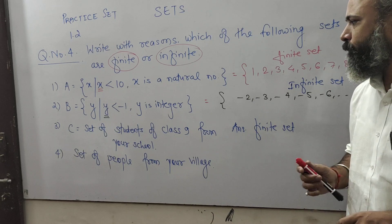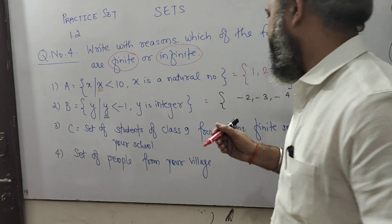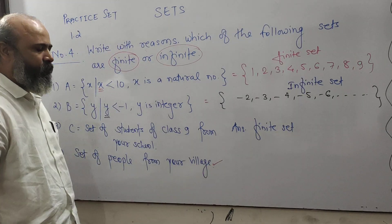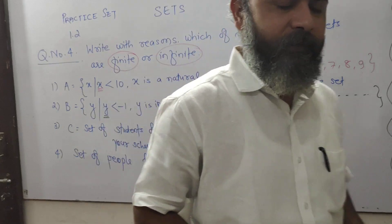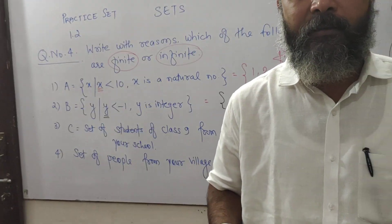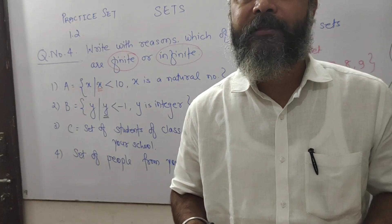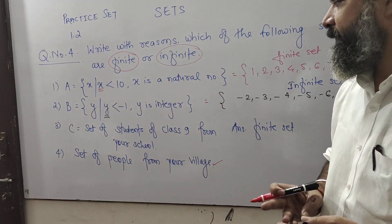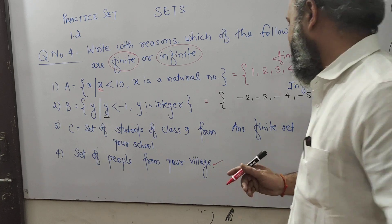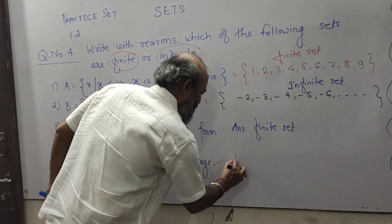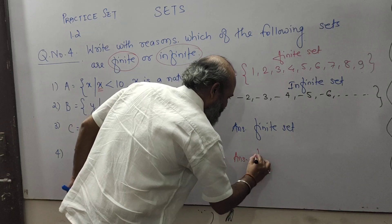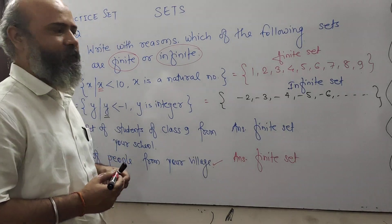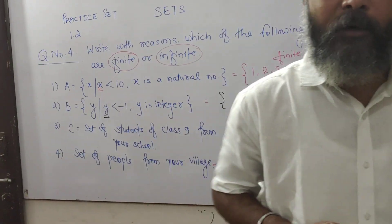Fourth one is the set of people from your village. The people who live in your village are countable. Therefore, we say that the given set is a countable set, and the answer is finite set. The reason: the people of the village can be counted.